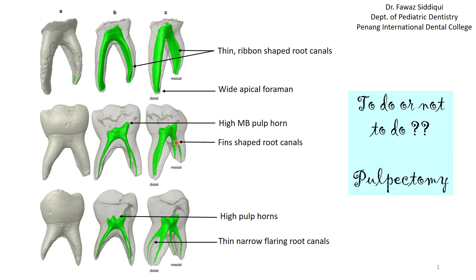Primary root canals also have fins — the area between two root canals is called the fin — and you cannot place your instrument into the fin. Therefore, we rely on chemo-mechanical preparation, flushing frequently with sodium hypochlorite so that pulp remnants get dissolved and removed. This is one reason why the chances of post-operative pain, failure, or relapse of pulpectomy is quite high, especially in teeth with chronic infections.